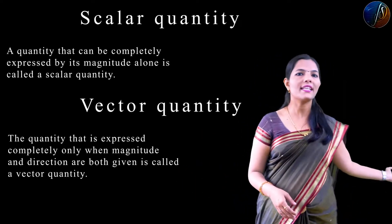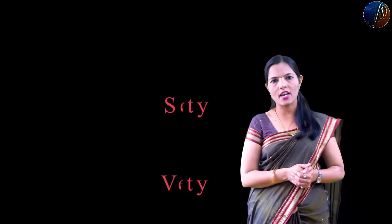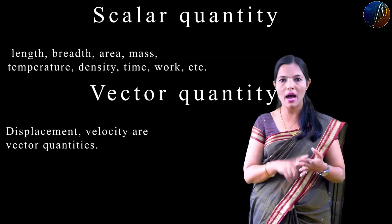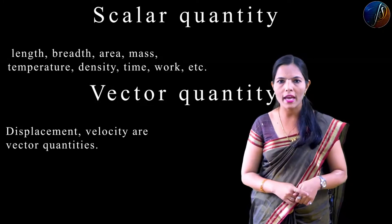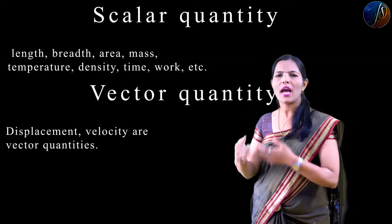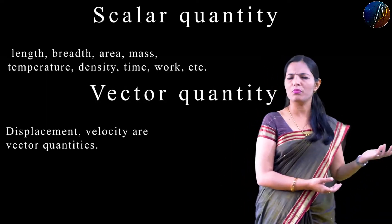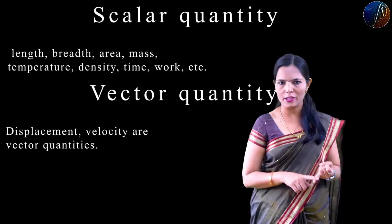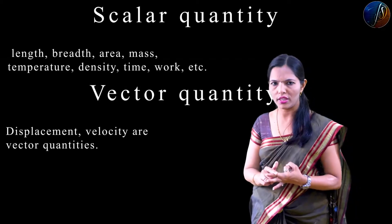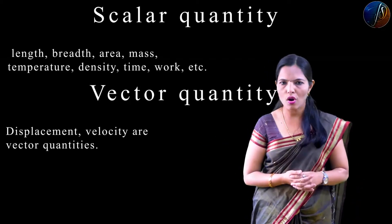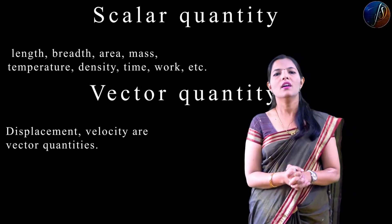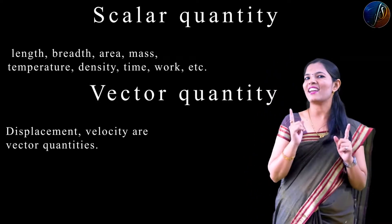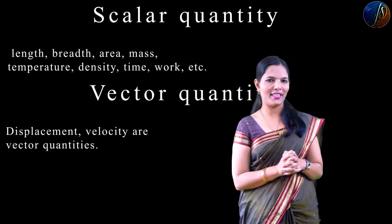There are many examples of scalar quantity: length, breadth, height, mass, volume, time, temperature, density — these are all scalar quantities. For vector quantity, you can say displacement, force, velocity — all these are vector quantities.